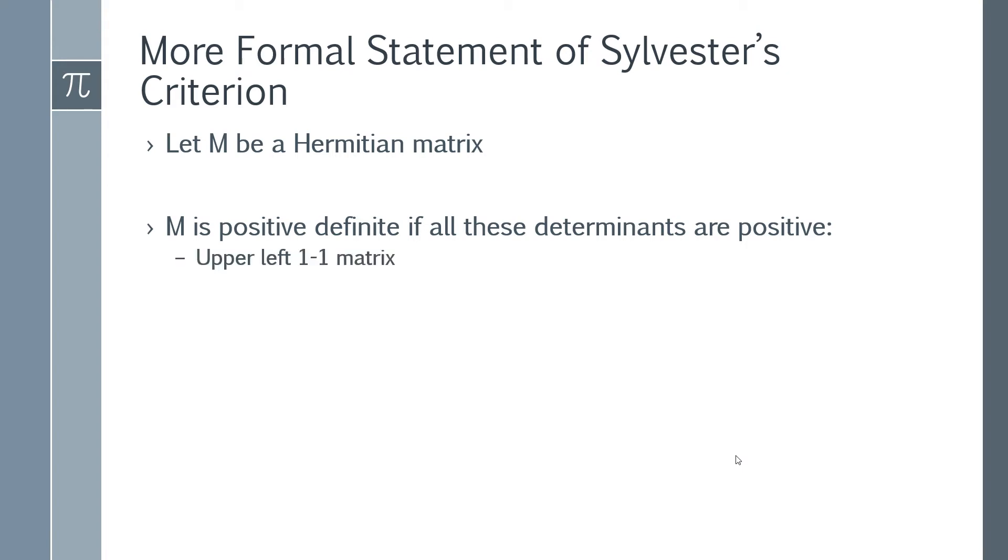So if you find the determinant of the upper left one by one matrix, then you do the upper left two by two matrix and then a three by three matrix. Assuming this is larger than three by three, you would continue. You would find four by four and then you would continue all the way until you've got every single submatrix and then the whole matrix M itself. Find every single determinant and if they are all positive, then you've satisfied Sylvester's criterion and you have a positive definite matrix.